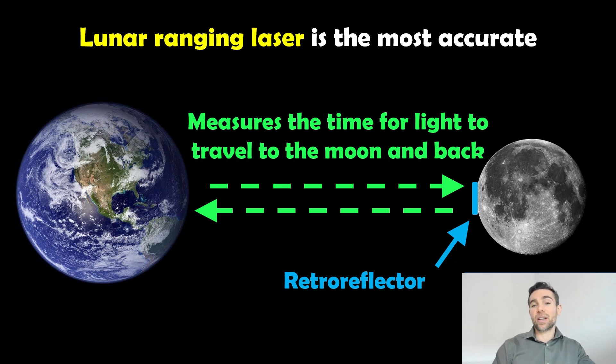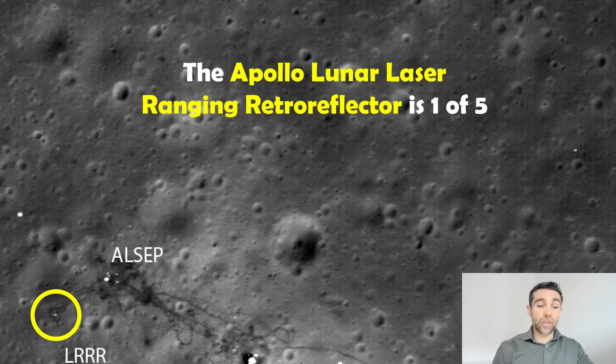We know how fast light travels, we know the speed of light. So if we can time the pulse of the laser there and back, we can basically get the distance.